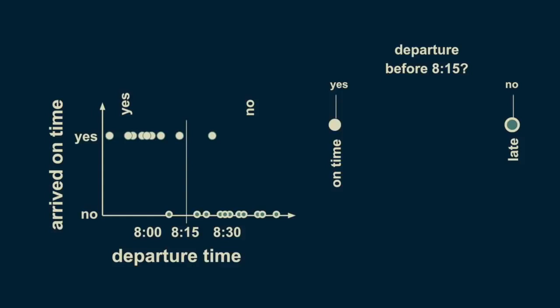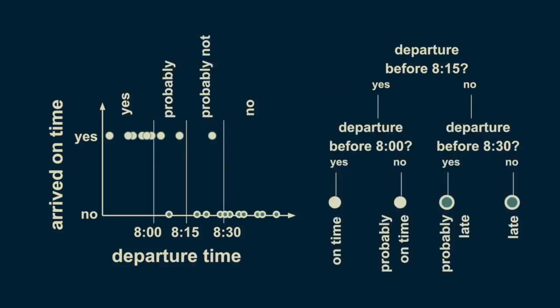We can refine our estimate of punctuality by subdividing both the before 8:15 and the after 8:15 branches. If we add additional decision boundaries at 8 o'clock and 8:30, then we can divide up our arrival estimate more fully. Those before 8 o'clock are confidently on time. Those between 8 and 8:15 are probably on time, but not guaranteed. Similarly, departure times after 8:15 can be divided into those after 8:30, which are almost certainly late, and those before 8:30, which still have a small chance of being on time.